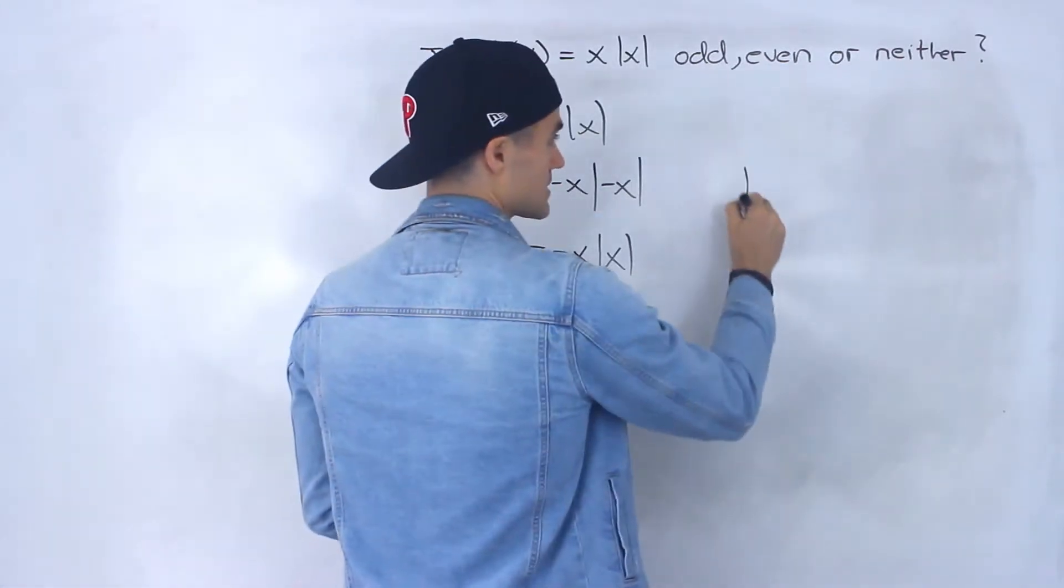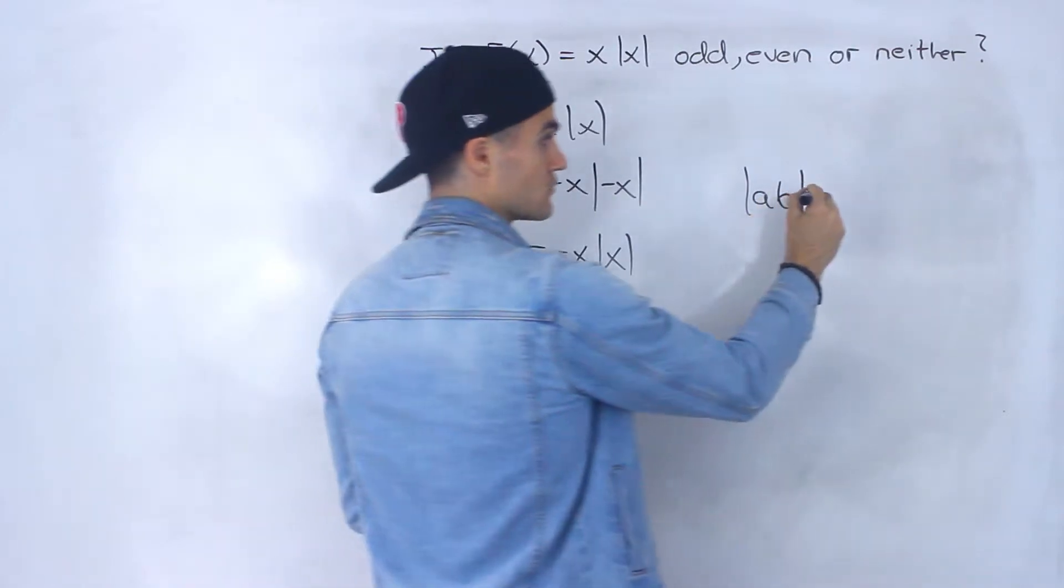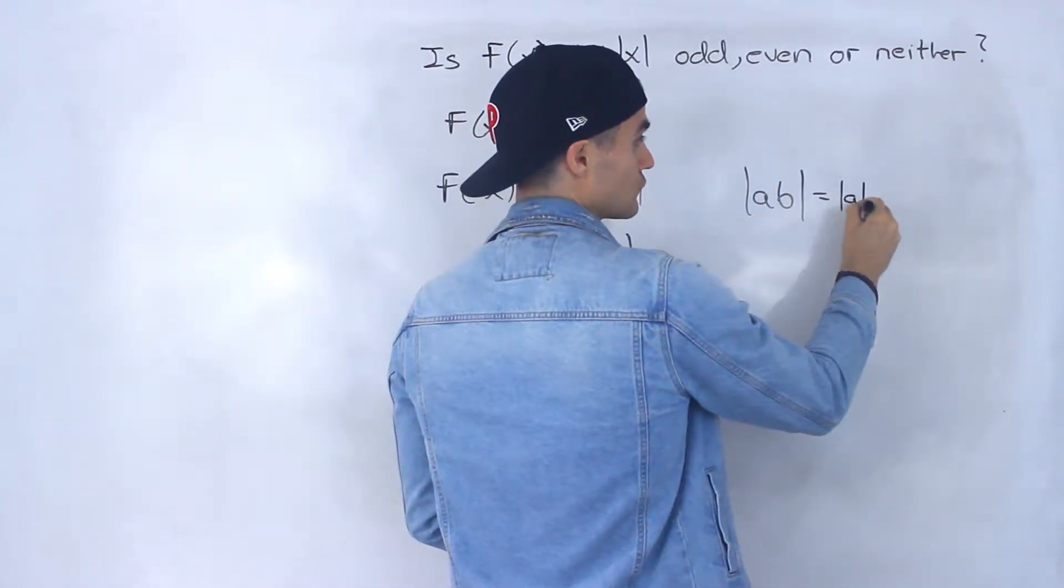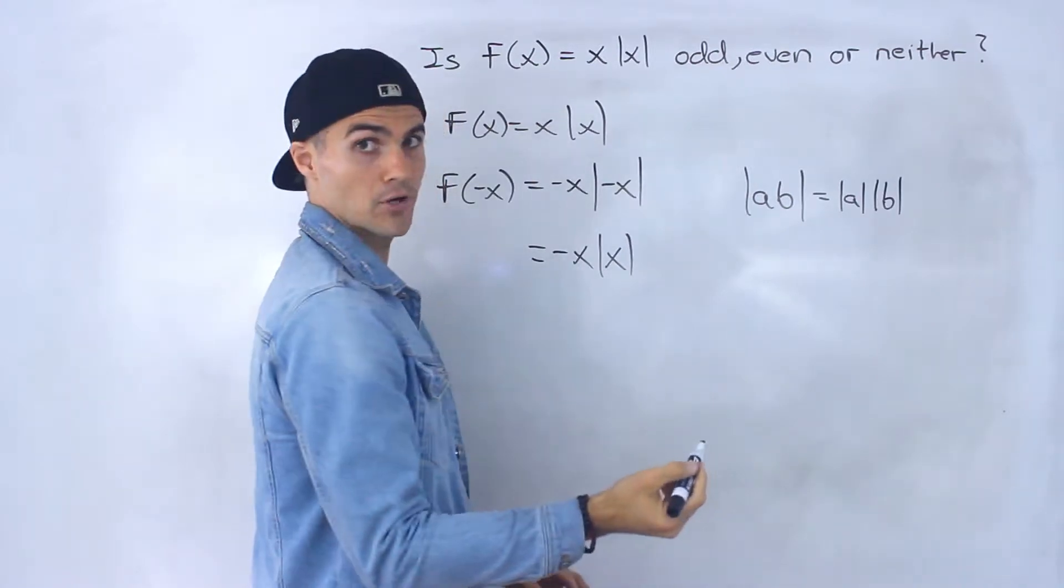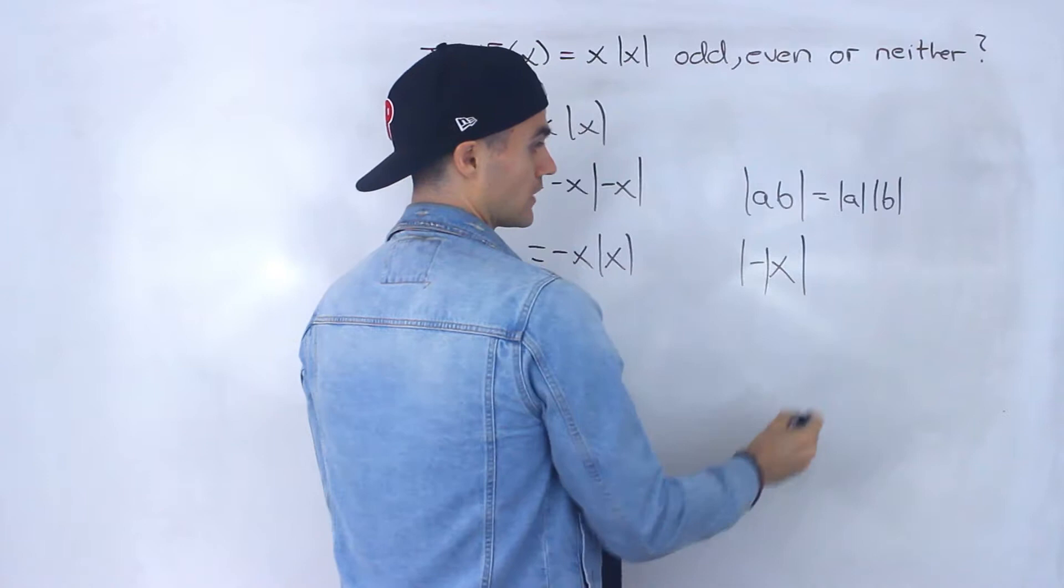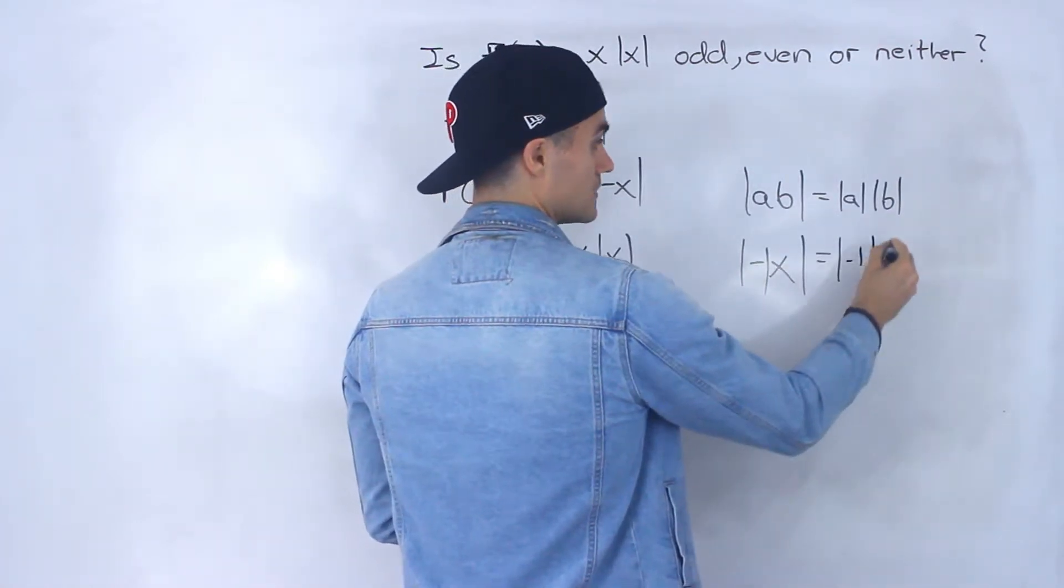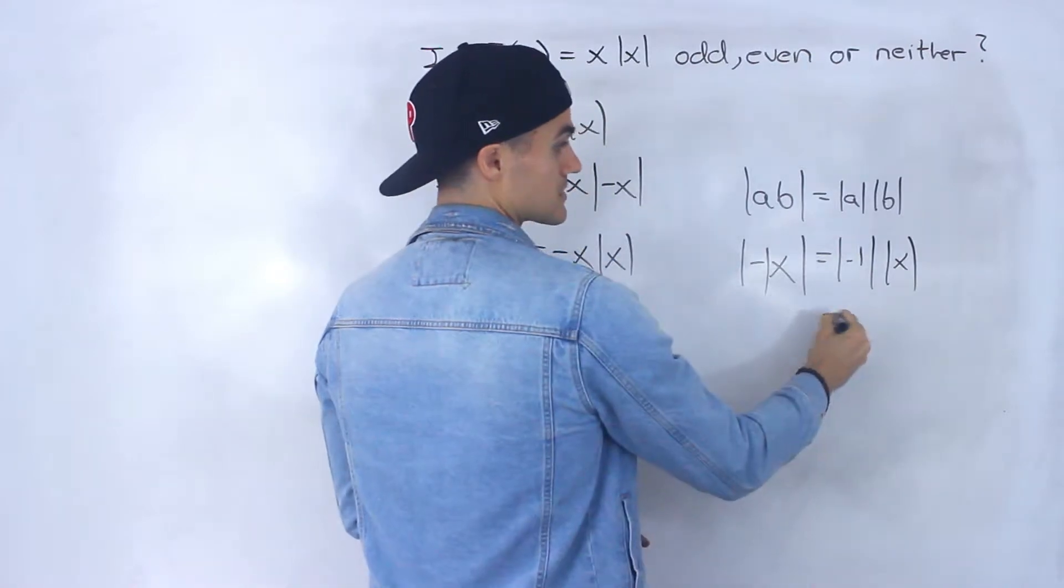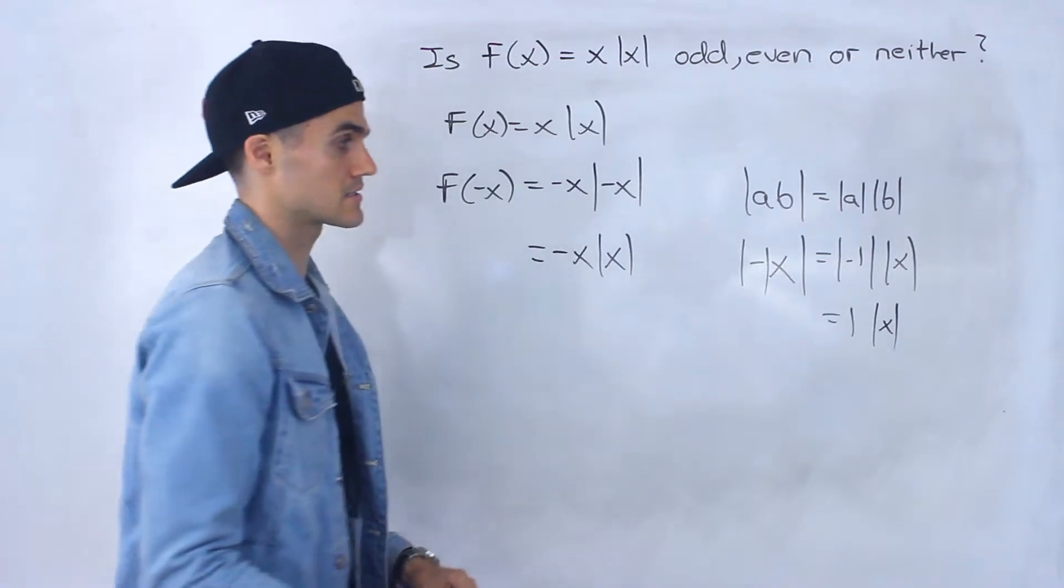Another way to see this is if we have a times b within an absolute value that's the same as the absolute value of a times the absolute value of b. That's a property right there. So notice with negative x there's like a negative 1 here. That's like the absolute value of negative 1 times the absolute value of x. Absolute value negative 1 is just positive 1 and then the absolute value of x just stays as is.